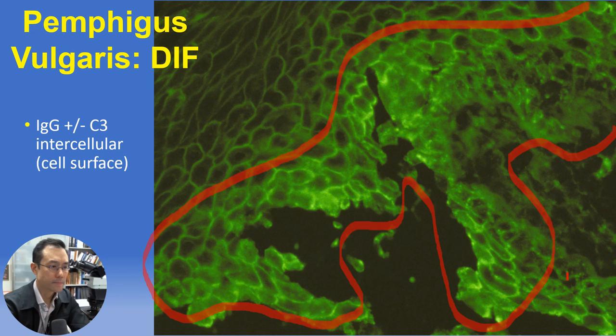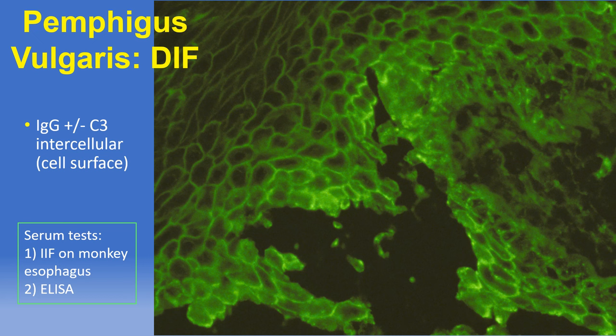The basal layer or dermal-epidermal junction itself should test negative in pemphigus vulgaris, with IgG and/or C3. For ancillary diagnostic testing, serum tests are highly reliable — indirect immunofluorescence with monkey esophagus as the most sensitive substrate, or ELISA for specific targets.